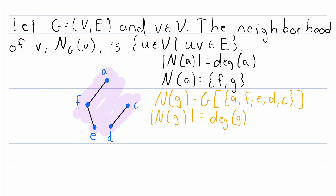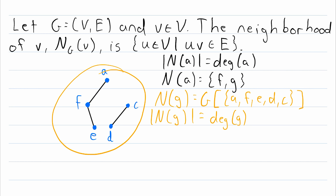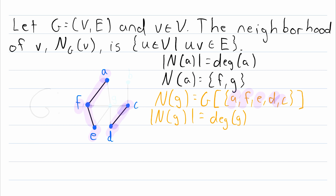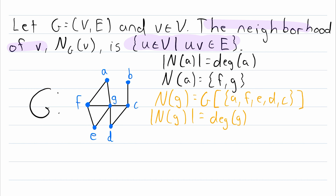Remember that the subgraph induced by a set of vertices is the graph containing all vertices in that set and all of their adjoining edges, and that is what this subgraph here is. So again, sometimes the neighborhood of a vertex is defined to be the subgraph induced by the set of adjacent vertices. In the case of vertex G, this is the set of vertices adjacent to G, so its neighborhood is the subgraph induced by that vertex set — it has all the adjacent vertices and all of their adjoining edges.